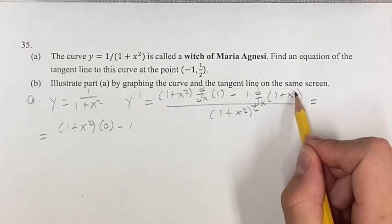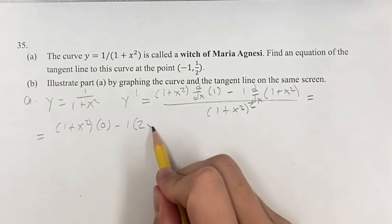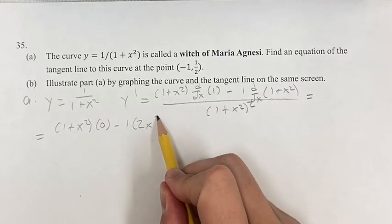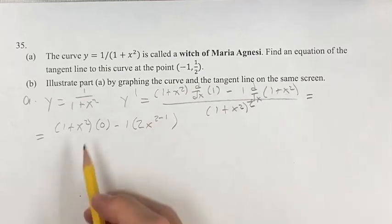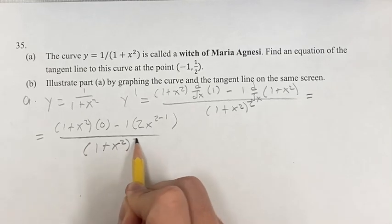The derivative of x squared is 2, bringing down the exponent for our power function, times x to the 2 minus 1, using the power rule. And then the denominator, we can leave the same.